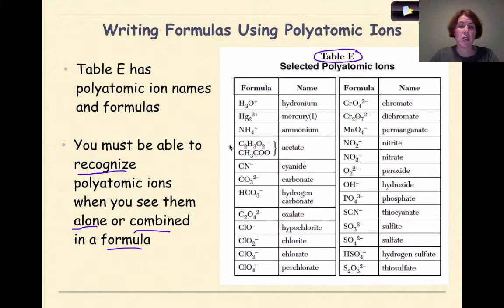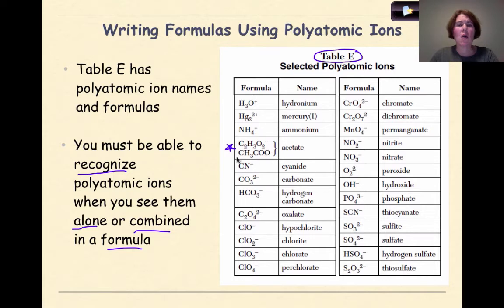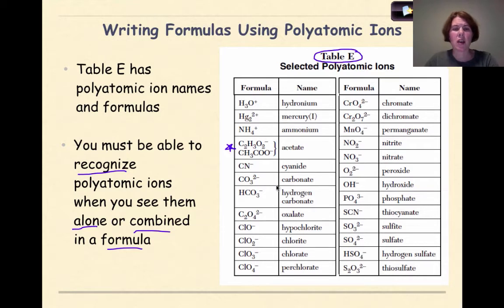The acetate ion can be represented in one of two ways: either as C2H3O2⁻¹ or CH3COO⁻¹. C2H3O2 is more of an inorganic way of representing it, while CH3COO⁻¹ is more of an organic way, which we'll talk more about later. Remember that a minus sign by itself just means minus one.